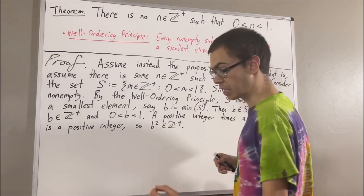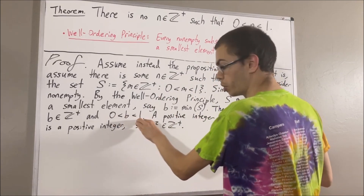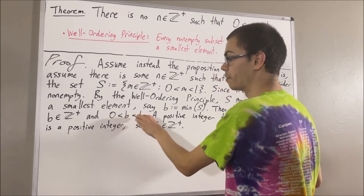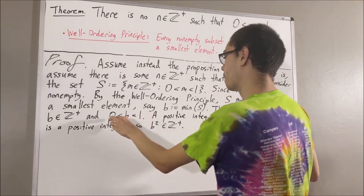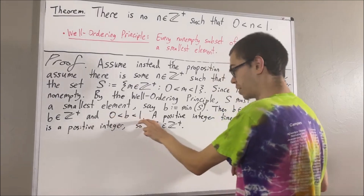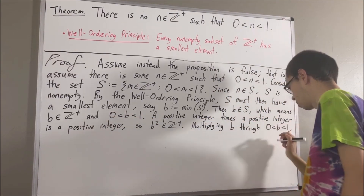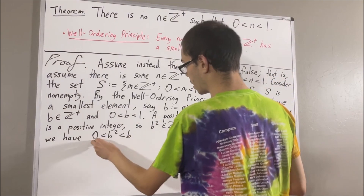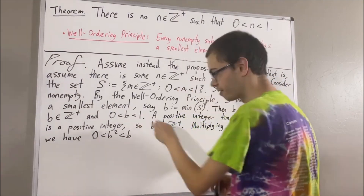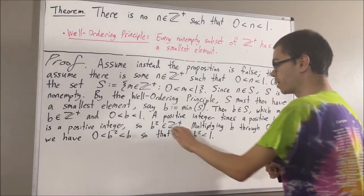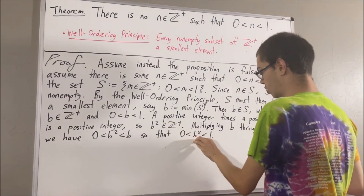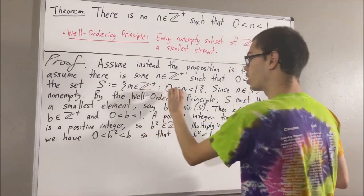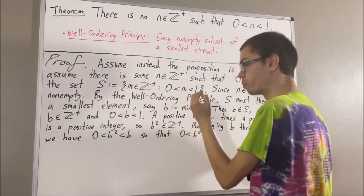Since b is positive, if we take b and multiply it on all three parts of our inequality, we're going to get b times 0 is less than b times b is less than b times 1. In other words, we get that 0 is less than b squared is less than b. And since b is less than 1, this tells us that 0 is less than b squared is less than 1. So we see that b squared is a positive integer and 0 is less than b squared is less than 1. These two facts tell us that b squared satisfies both requirements to be an element of S, so b squared is an element of S.